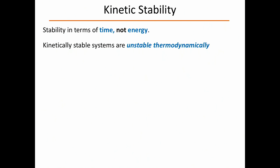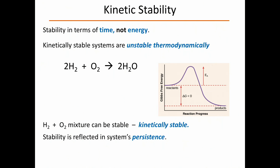But there's not just thermodynamic stability — there's also kinetic stability, which is stability in terms of time, not energy. Kinetically stable systems are thermodynamically unstable, but they're stable in the sense that they stick around. For example, if you take hydrogen and oxygen and mix them with no spark and no catalyst, they'll sit around for a million years without reacting, even though the reaction is thermodynamically favorable. The reaction profile shows hydrogen and oxygen on one side, water on the other, but if the barrier is too high, the molecules can't get over — that's a kinetically stable system. The stability is reflected in the system's persistence.